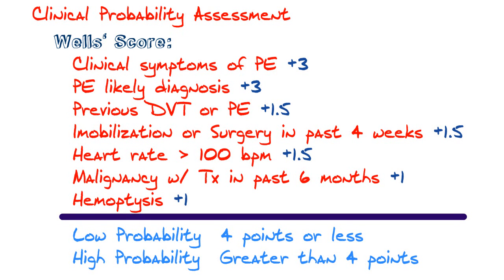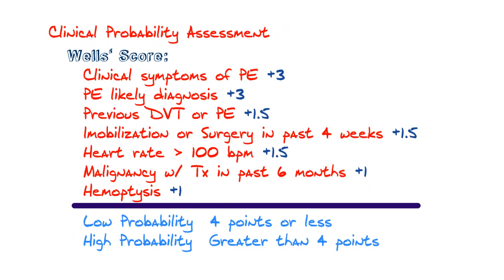If you have a previous history of DVT — a clot in your legs or upper extremities — or a PE, you get 1.5 points. A history of immobilization or surgery in the past four weeks gives another 1.5 points. Heart rate greater than 100 gives another 1.5 points. A history of cancer, especially with treatment in the past six months, gives one point. And hemoptysis — coughing up blood — gives another point. If the total is four points or less, the patient has a low probability of PE; greater than four points indicates a higher probability.